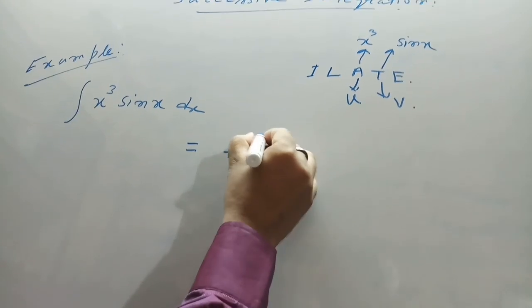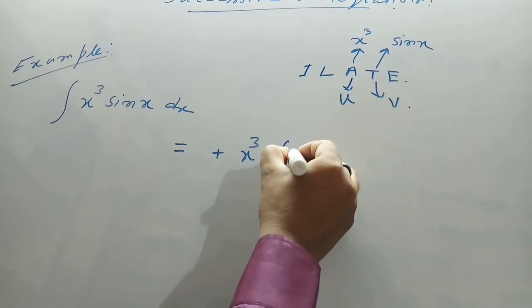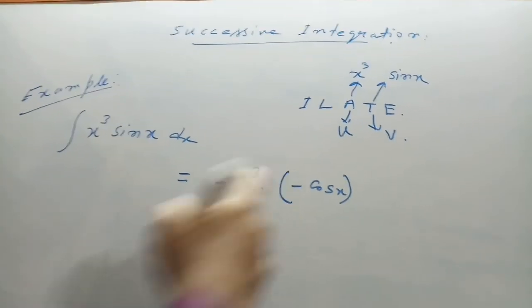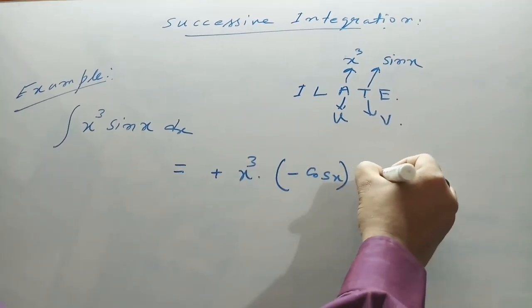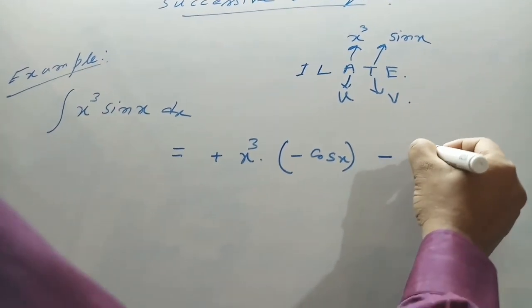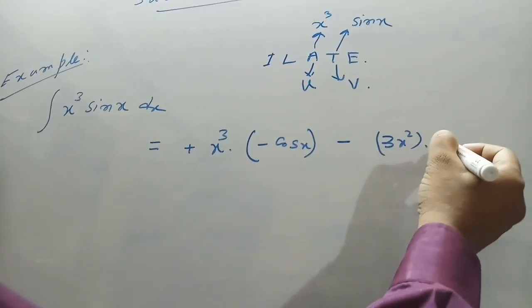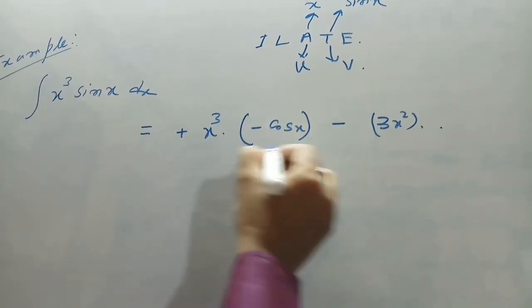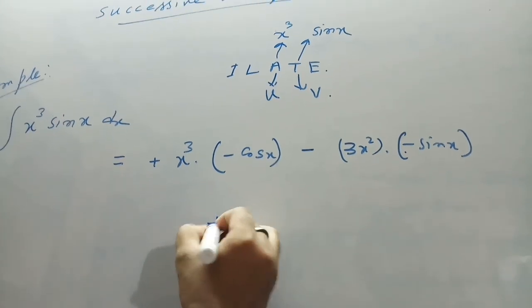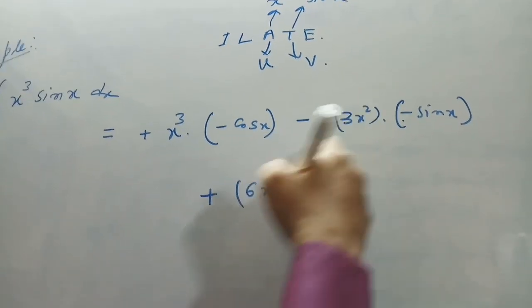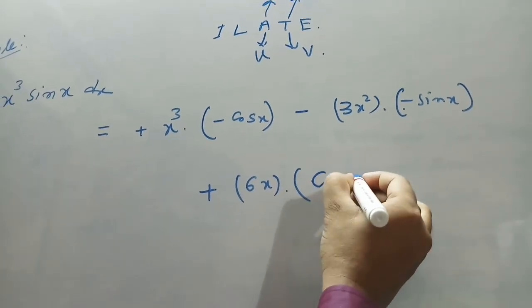Therefore, starting with plus, the first function x³ multiplied by the integral of the second function: integral of sin(x) is −cos(x). Next step is minus: derivative of x³ is 3x², multiplied by the integration of −cos(x), which is −sin(x). Next step is plus: derivative of 3x² is 6x, multiplied by the integration of −sin(x), which is −cos(x).